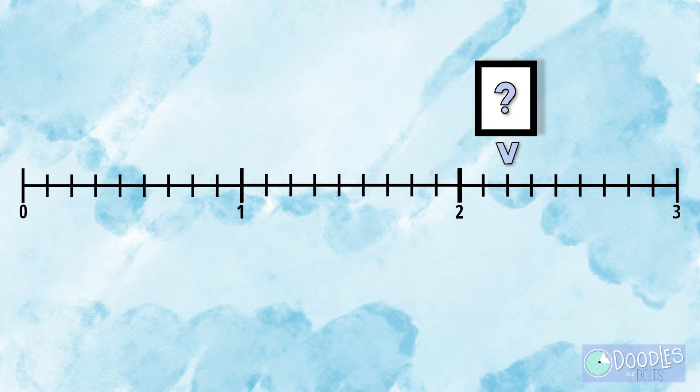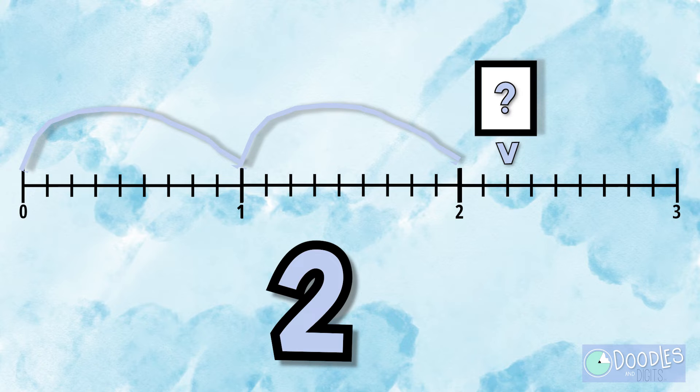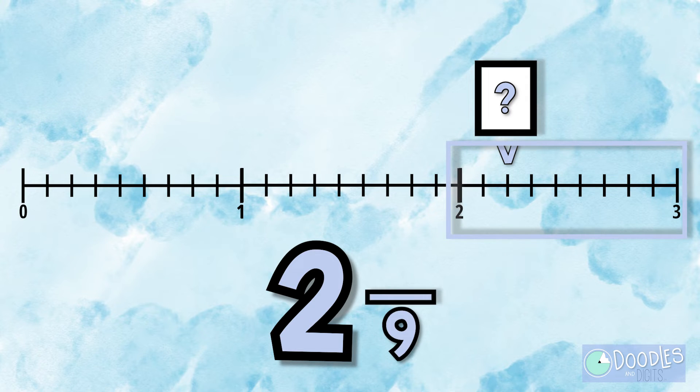Let's look at this number line. How many wholes are we jumping? We're jumping two wholes. Now let's check out the fraction. This is broken into ninths so our denominator is going to be nine and we make two small jumps so our numerator is going to be two.